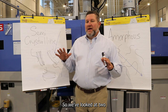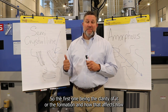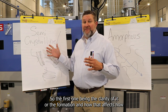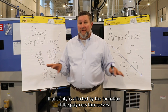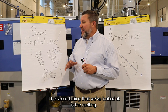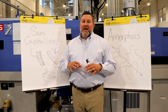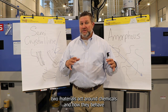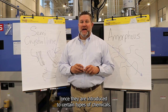So we've looked at two pretty distinct features of these two materials: the first being the clarity and how it's affected by the formation of the polymers themselves, and the second being the melting point. Now let's take a few minutes and look at how these two materials act around chemicals and how they behave once introduced to certain types of chemicals.